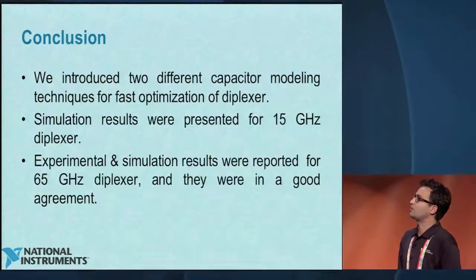In conclusion, we introduced two different capacitor modeling techniques for fast optimization. The first is fast optimization for a package capacitor: use the Modelytics model in AWR and do only a final verification in the 3D simulator, demonstrated for the 15 gigahertz diplexer. The second, for 65 gigahertz, uses the broadside capacitor modeled as a pi circuit via Y-parameter extraction from the 3D simulator, optimized in AWR, with experimental results confirming the approach. Thanks so much for attending, and thanks to Dr. Kana and Erfan for their great work.